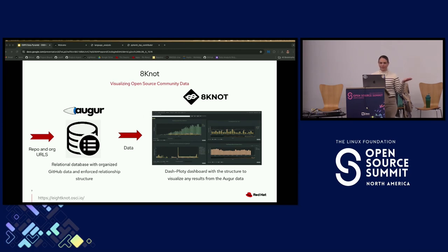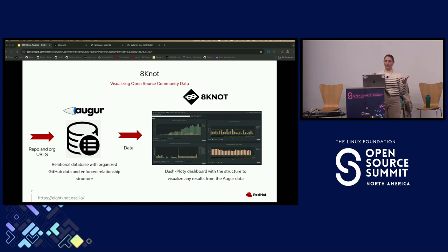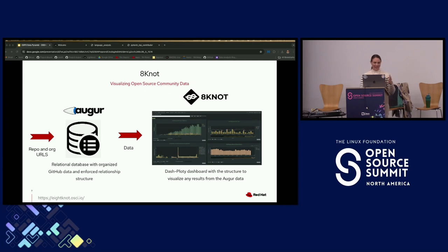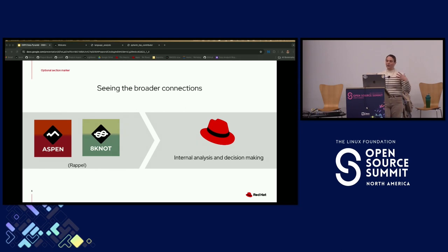So, how does 8-Knot work? It visualizes open source community data. We put in repo and org URLs and give those into Augur, which is a relational database with organized GitHub data and enforced relationship structure. That structured data really powers some of our more complex visualizations — we don't have to do that preprocessing ourselves. We can be sure that when we have a contributor ID, we can link together their comments on an issue, their pull request, and a review. We take the data from that Augur database and it feeds directly into the 8-Knot dashboard, which is a Dash/Plotly dashboard.